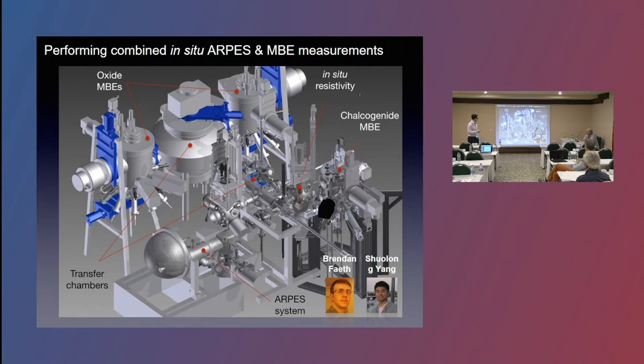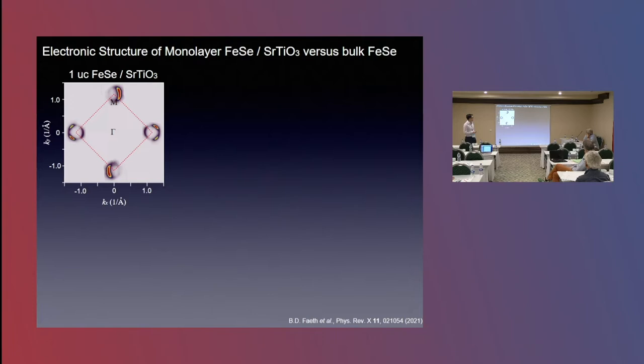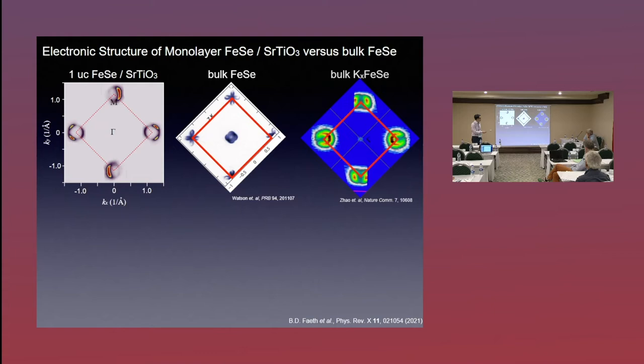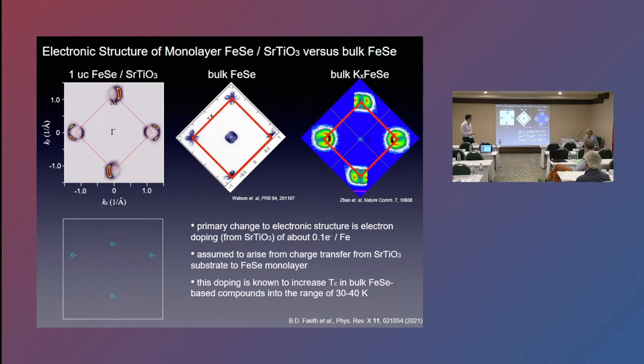So what do we see when we measure the electronic structure of these monolayer iron selenide films? You get this electronic structure where you have these electron pockets at the zone corners. It's quite a bit different than the bulk iron selenide where you have these compensating electron hole pockets and much more reminiscent of what you get in the electron-doped bulk iron selenide compound. So that already indicates that one of the really major things that's happening when you grow iron selenide on STO is charge transfer of about 0.1 electrons per iron atom from the STO to the iron selenide. That's clearly borne out here, and that was established quite long ago.